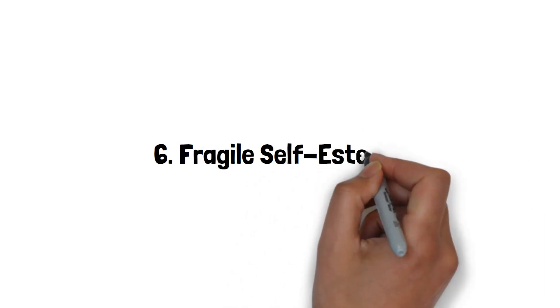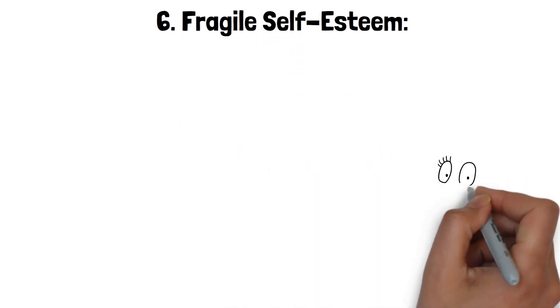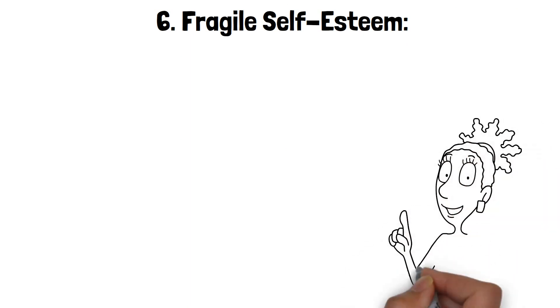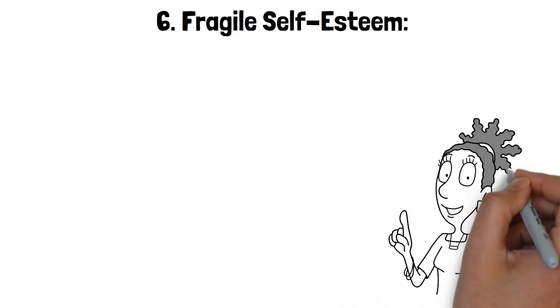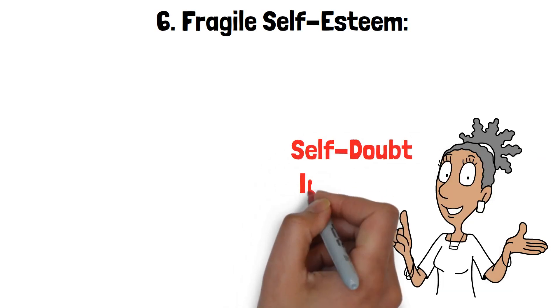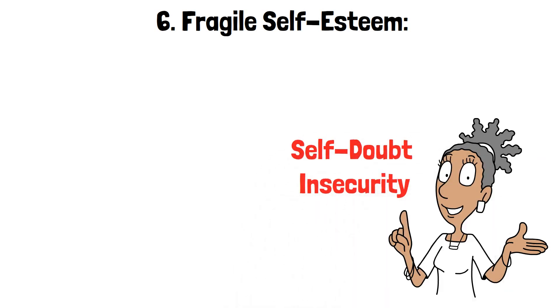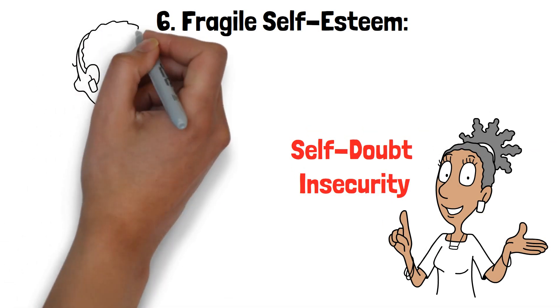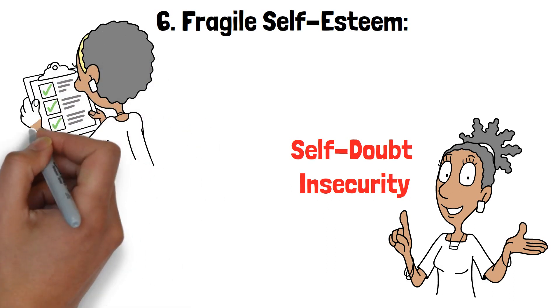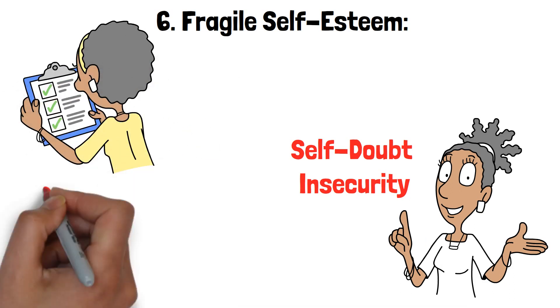6. Fragile Self-Esteem. Despite their grandiose and self-assured exteriors, narcissistic wives often harbor surprisingly fragile self-esteem. Under the surface, they may be riddled with self-doubt and insecurity. This paradoxical blend of arrogance and vulnerability can be puzzling.